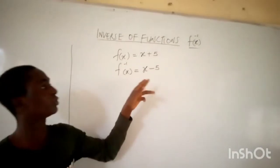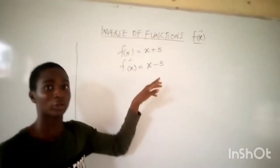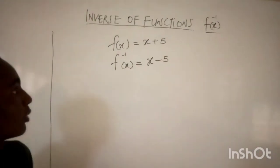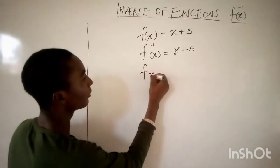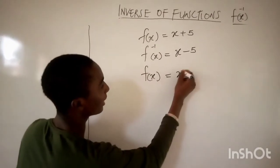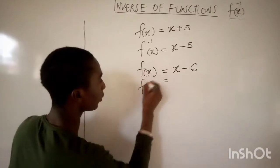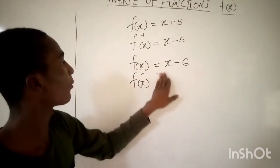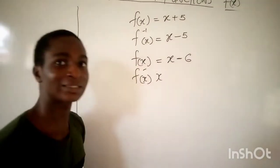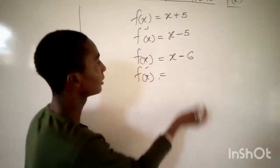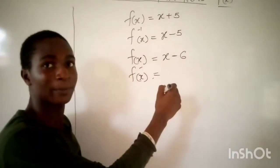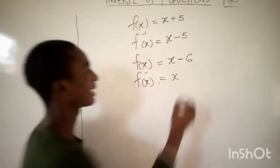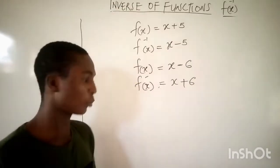We know the opposite of addition is subtraction, so the inverse subtracts 5 from x. Now let's see another equation. If we have f(x) equal to x minus 6, the inverse of this — ask what did f(x) do to x. The f(x) subtracted 6 from x, so for the inverse, it will add 6 to x.